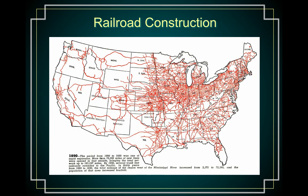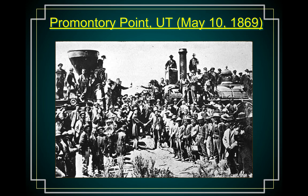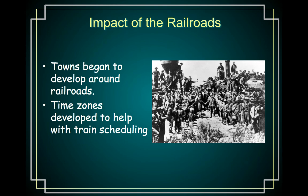Take a look at this map — everywhere you see red is where there were railroads, around 1890. The period between 1880 and 1890 was one of the most rapid expansions of railroads. As you can see, more than 70,000 miles of new lines were created, bringing the total network up to over 163,000 miles. It's just amazing how much the United States grew at this time.